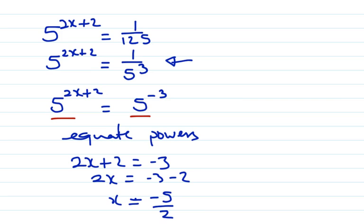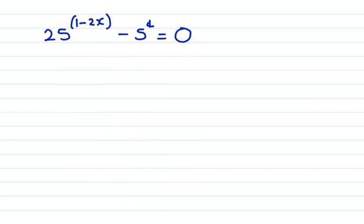Alright, so there we have it. Let's take it up a little bit more and see what happens. Alright, final problem of the day. Again, I'm going to go for trying to make sure I have the same base. So I'm going to go for 5 again this time. So 25 is 5 square. And 25 already had a power, which was 1 minus 2x. So that 2, the square power for 5, is going to multiply by that.